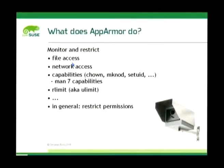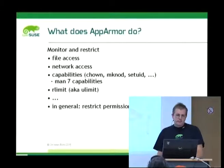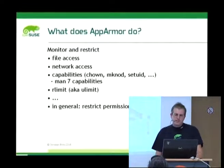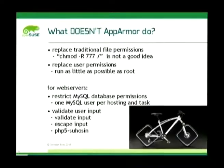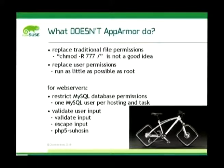What does AppArmor do? It monitors and restricts file access, network, capabilities like chown and setuid — you can get a full list in 'man 7 capabilities'. You can also set rlimit values and in general restrict permissions. Counter question: what does AppArmor not do? It doesn't replace the traditional file permissions, so please do not chmod 777 everything.